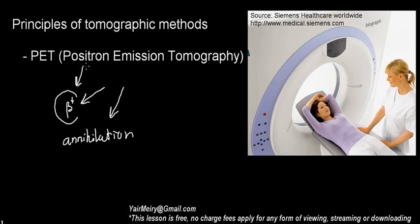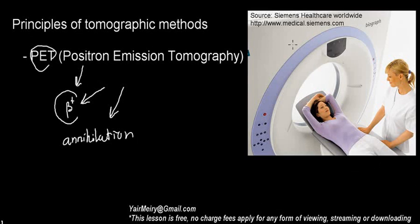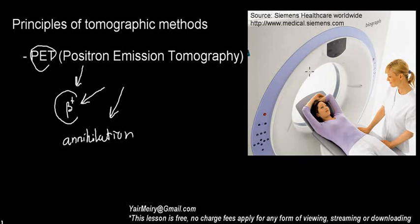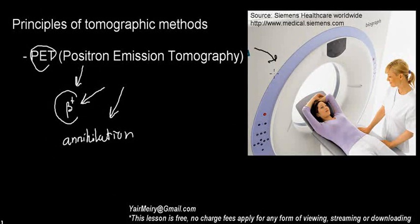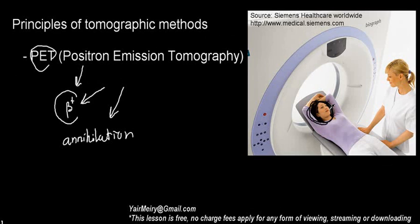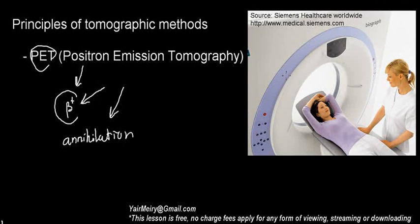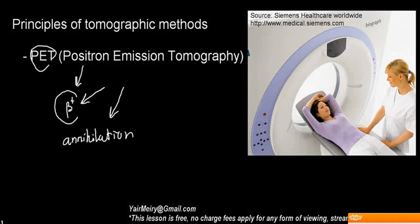This was covered in previous videos. Equipped with this information, we can understand positron emission tomography. On the right side we see an image from Siemens Healthcare Worldwide - a very well-integrated PET machine that also does CT scans. We can see a very happy person here, maybe because she can actually afford a PET scan. We're going to discuss the PET scan and maybe why it's so expensive.